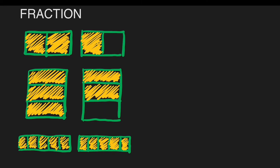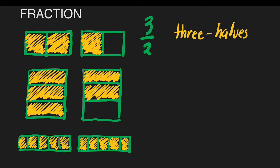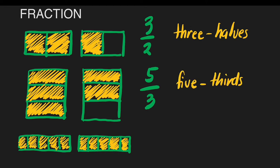For the first fraction, we call it three-halves, written as three-halves. For the second fraction, this is five-thirds, written as five-thirds. And for the third fraction, this is ten-fifths, written as ten-fifths.